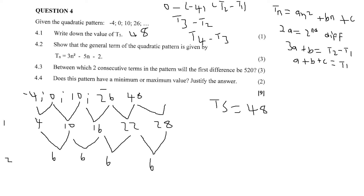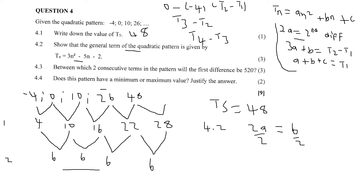Now we go to 4.2. We need to prove the formula for TN. The first thing is to find A. Using the formula: 2A equals second difference, which is 6. So 2A equals 6, meaning A equals 3.